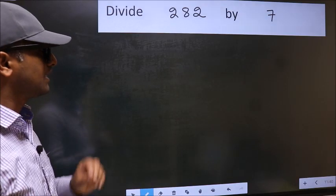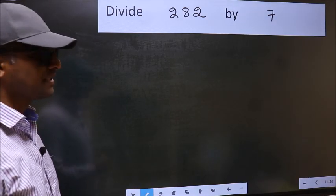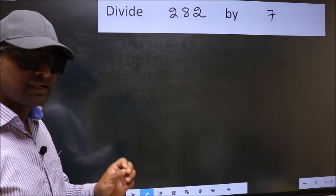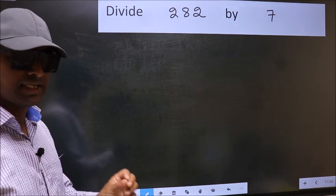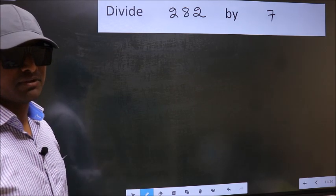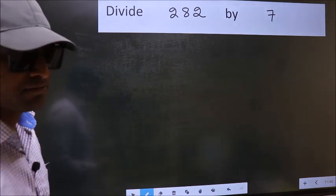Divide 282 by 7. While doing this division, many do this mistake. What is the mistake that they do? I will let you know. But before that, we should frame it in this way.